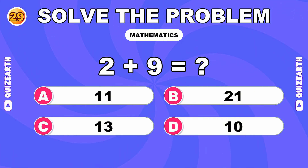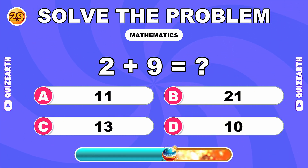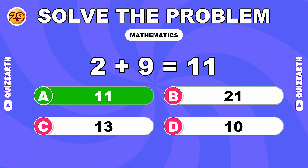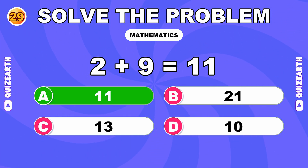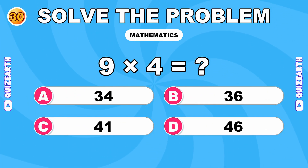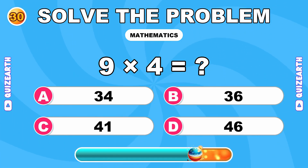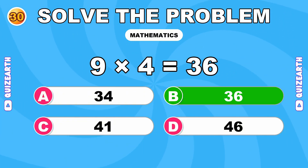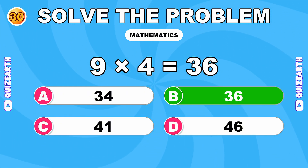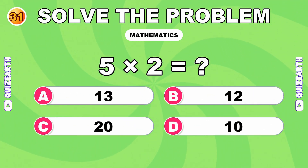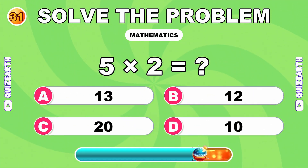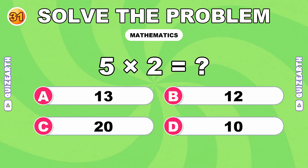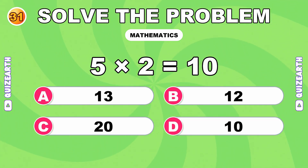How much is 2 plus 9? Mind-blowing. The answer is 11. What do you get when you multiply 9 by 4? Spectacular. The answer is 36. What is 5 times 2? You're unstoppable. The answer is 10.